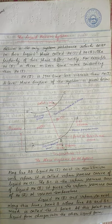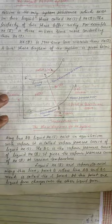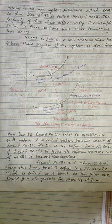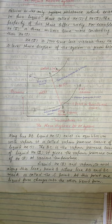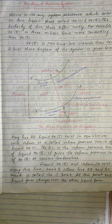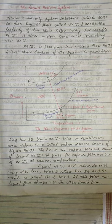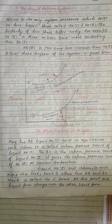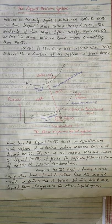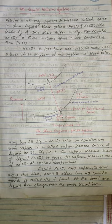The phase diagram for the helium system is as follows. Along line AB, liquid helium-I exists in equilibrium with vapor, so it is called the vapor pressure curve of liquid helium-I. Line BC is the vapor pressure curve of liquid helium-II, giving the vapor pressure of helium-II at various temperatures.